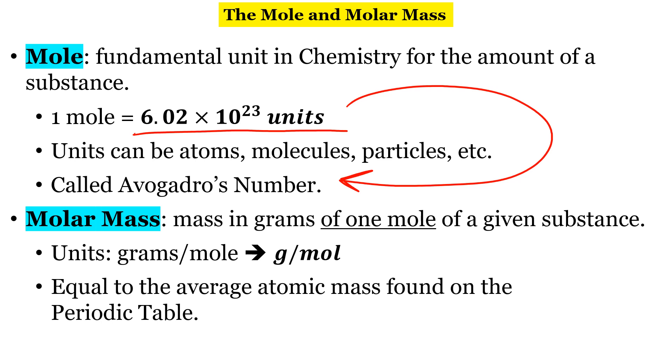Molar mass is the mass in grams of one mole of a given substance. The units for molar mass are grams per mole. And that's equal to the average atomic mass found on the periodic table. So,